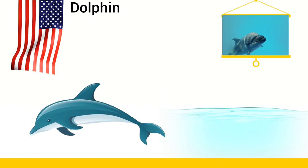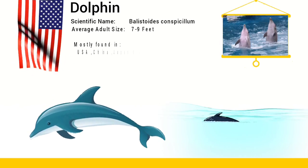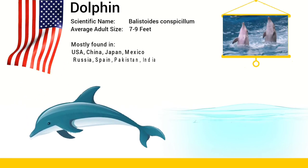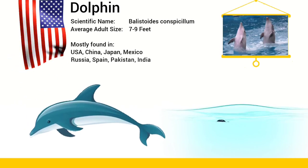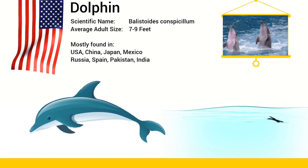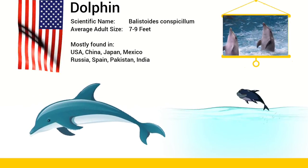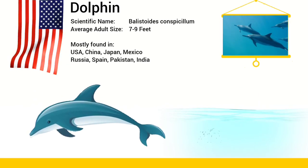Dolphins can be found all over the world and in different environments, from Northern Japan to Australia and from Southern California to Chile.